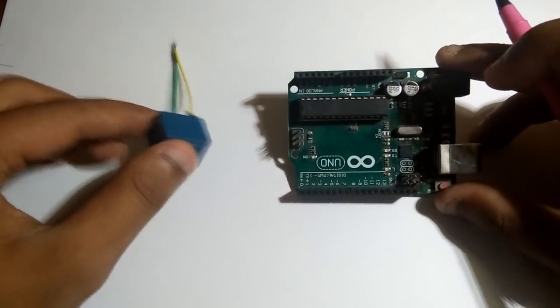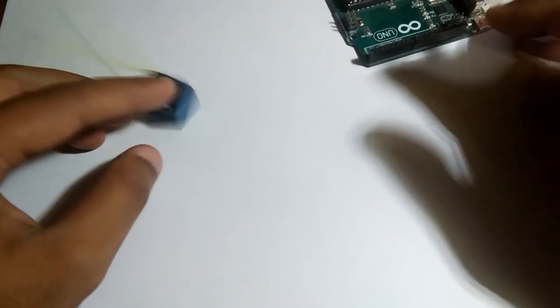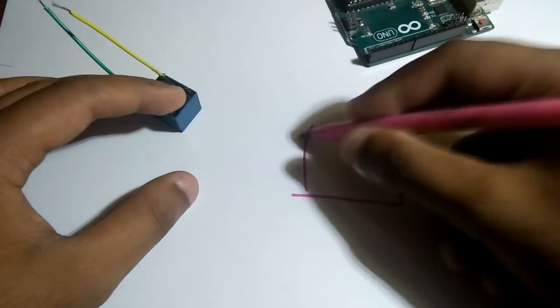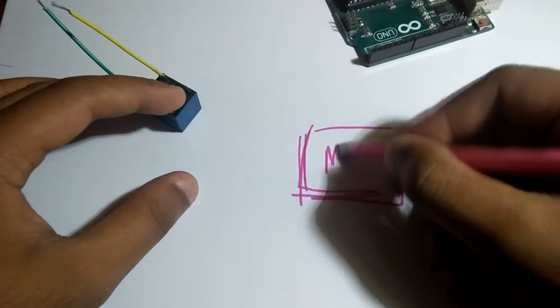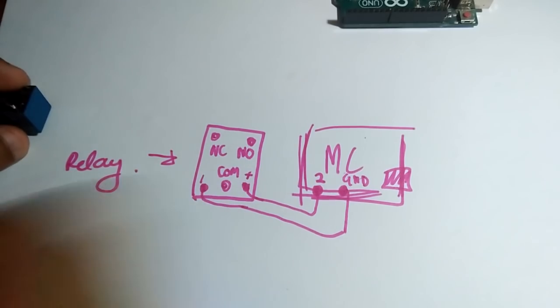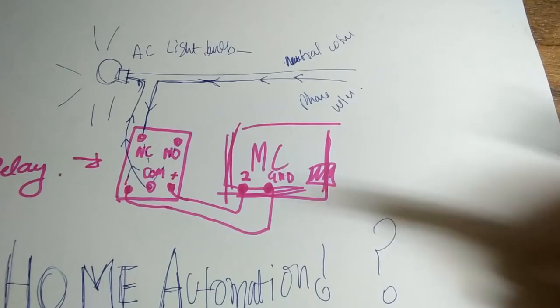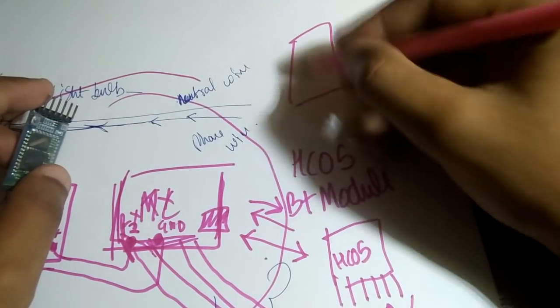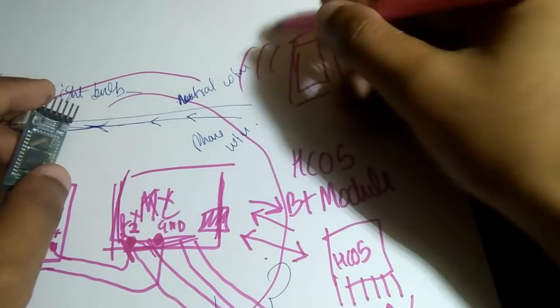Okay, so we can use relay in order to control any AC device but how is this home automation? To make this process more smart and practical, we need to add our relay with a microcontroller. Basically I'm going to connect the relay with Arduino Digital Pin 2 and add a Bluetooth module to our setup and control this small setup using a mobile app. Easy right?